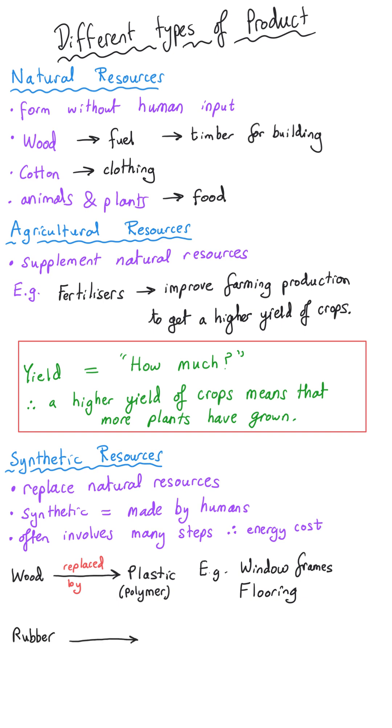Rubber is another example. We get rubber from the sap of a tree however certain polymers have been produced which are better than rubber for a number of uses for instance car tires.